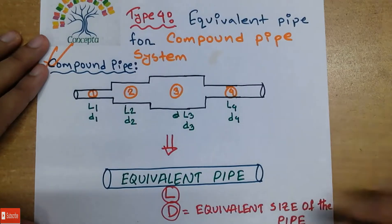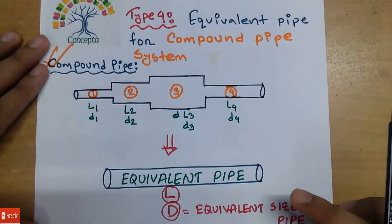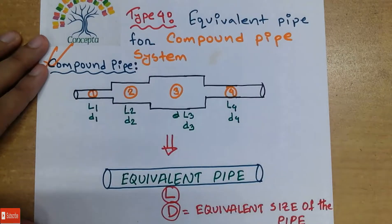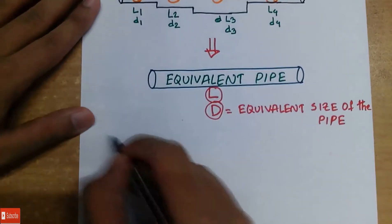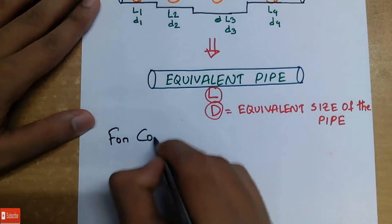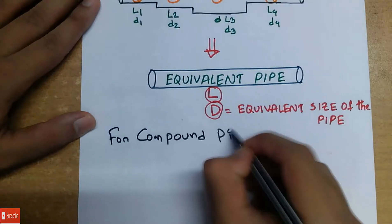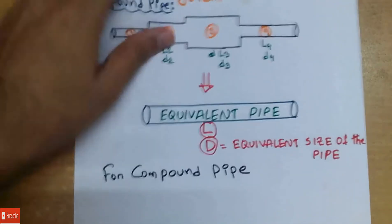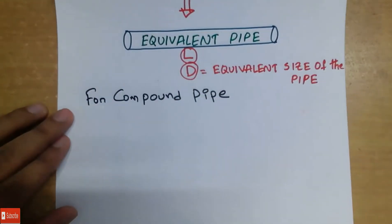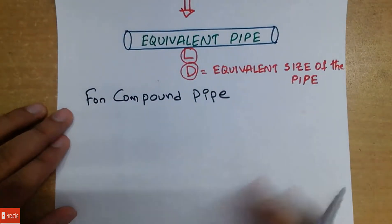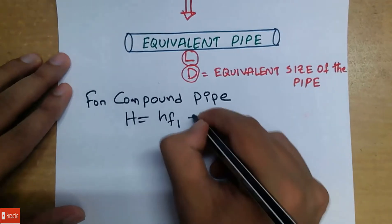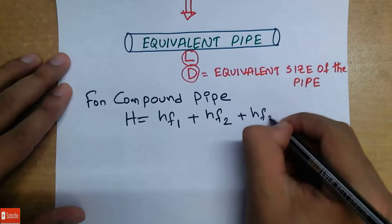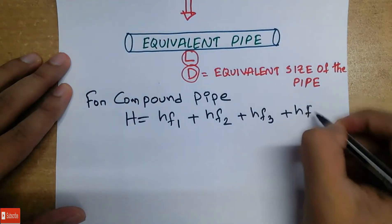When we have a single pipe and this fluid is flowing, the head loss expression applies. So the part of the evaluation, we have to find the problem and show the compound pipe in detail. So, we have a chart of length, and the total head loss is H equals to HF1 plus HF2 plus HF3 plus HF4.